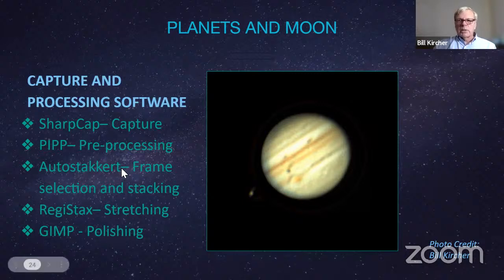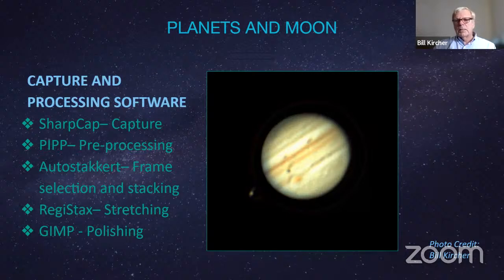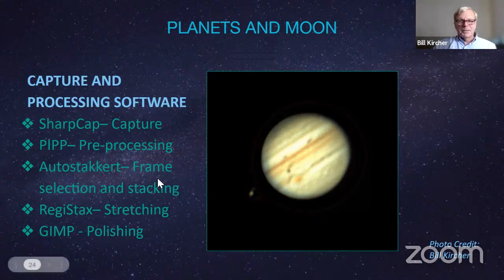In AutoStackert you sort and analyze the frames, decide how much to use — 10%, 15% — then stack, denoise, do a lot of steps, and it gets better and better. You finish with something you can polish up. I was very pleased with the result, though there's still a yellowish tinge I couldn't get rid of without affecting the other colors. So I'm trying again — and that's a great thing about astroimaging: there's always another day, always another try.